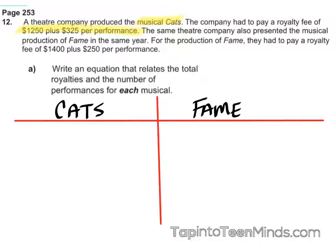Who can help me out with an equation that would fit the royalty fee for the musical Cats? Before we do that, can you tell me: is this a direct or a partial variation? And how do you know? Awesome job — excellent explanation. Partial variation because there is an upfront cost. So before they actually perform this show, they are going to have to pay something upfront regardless of whether they ever perform the show. So this is going to be a partial variation.